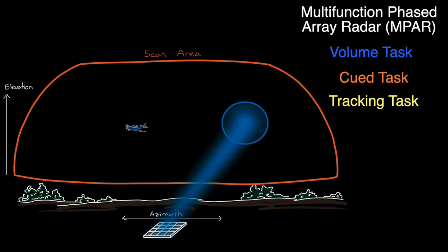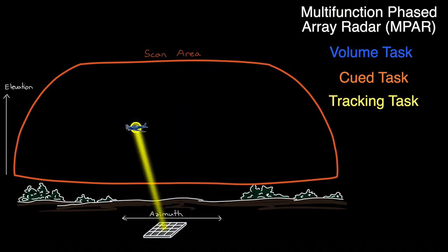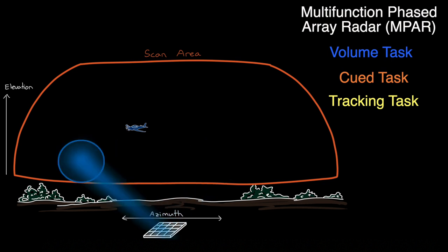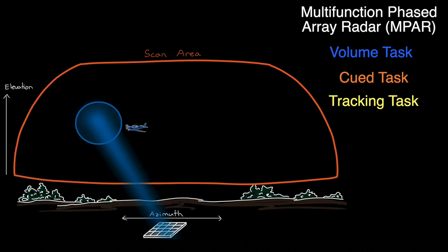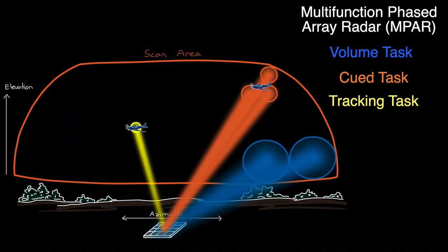In this way, we have the ability to switch between a volume search task that scans the entire area quickly, a queued search task that will produce better accuracy for a detected object, and a tracking task where the tracked object is revisited more frequently. This is a multi-function phased array radar system, or MPAR. But using the multi-beam capabilities of a digital beamformer means that a radar could actually do all three of these functions in parallel.